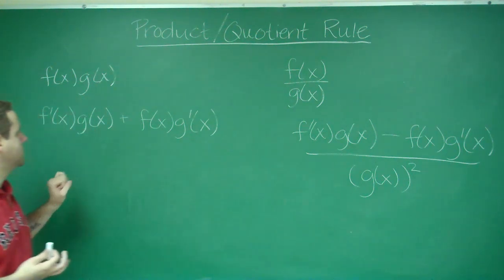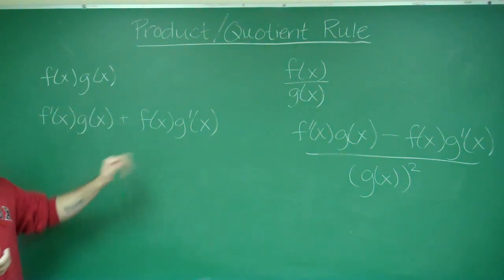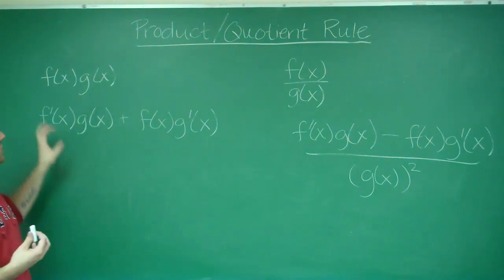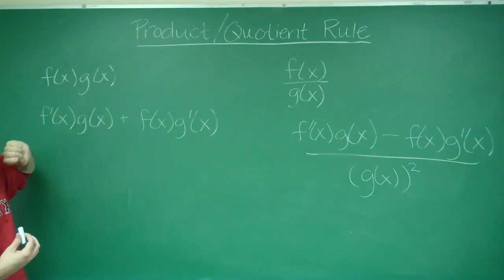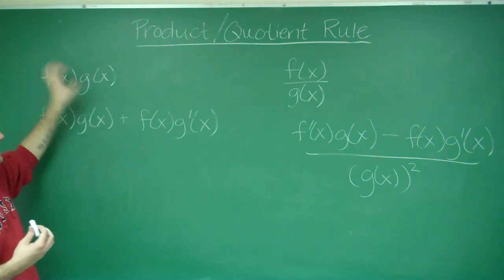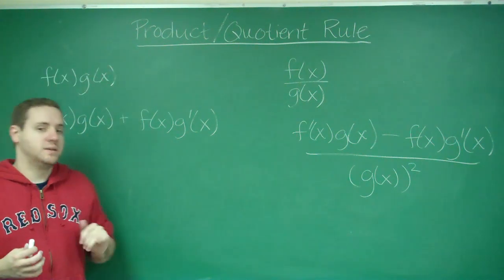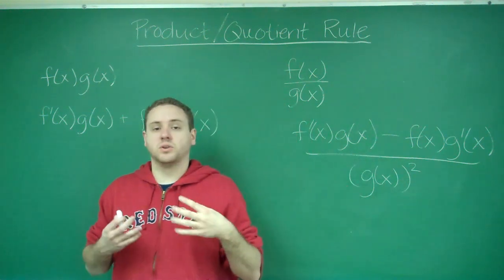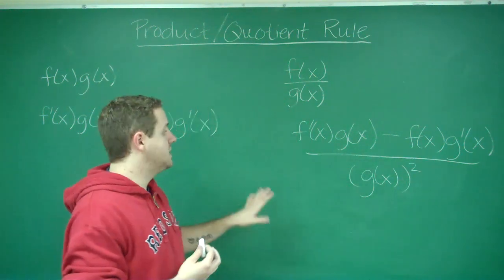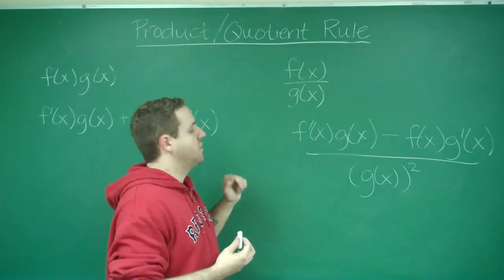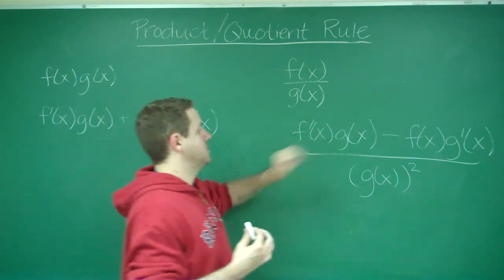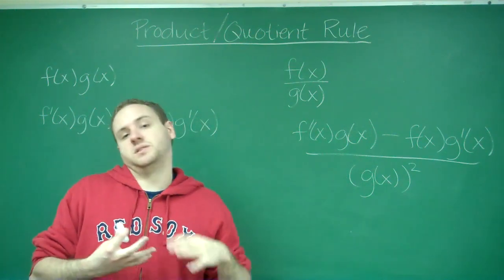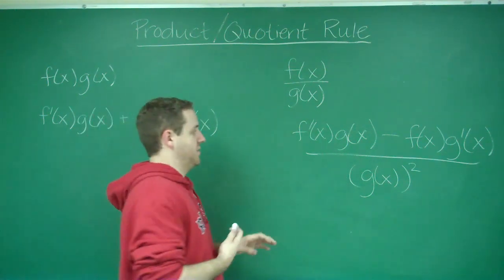With the product rule, since you have a sum, the order in which you write the two terms doesn't matter — just make sure you do the derivative of one times the other function and vice versa. In the quotient rule, though, because you have a subtraction sign, the order clearly does matter. You need to do the derivative of the top times the bottom, minus the derivative of the bottom times the top, all over the bottom squared. You might have heard this as the 'low d high, high d low' mnemonic.